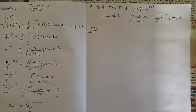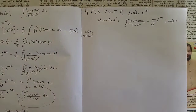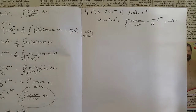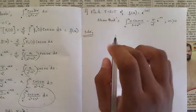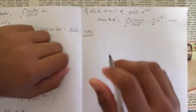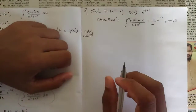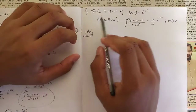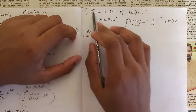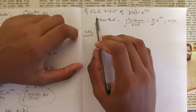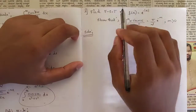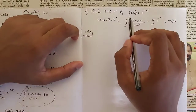Hello everyone, welcome to the new session. In the last class we discussed a few problems about the Fourier sine and cosine transform. We are going to continue with that. Today's first question — the third question we are solving — is to find the Fourier sine transform of f(x).